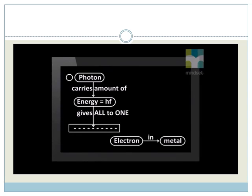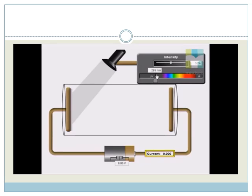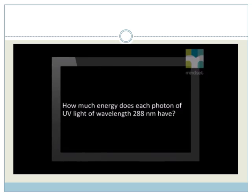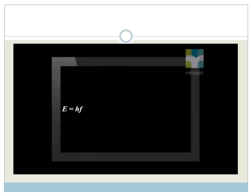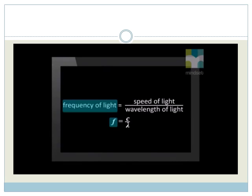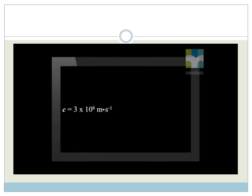As the light shines on a metal, each photon gives all its energy to one electron in the metal. We know that incident light with a wavelength of 288 nanometers can just eject electrons from zinc. How much energy does each photon of light of this wavelength have? To use this equation to solve the problem, we first need to find the frequency of light. Frequency of light equals the speed of light divided by the wavelength of the light. We know that the speed of light in a vacuum is 3 times 10 to the power 8 meters per second. So we need to convert the wavelength of this light into the unit meters too.